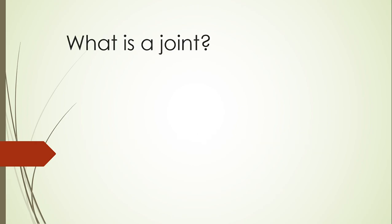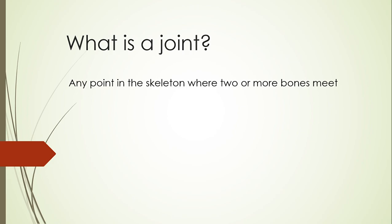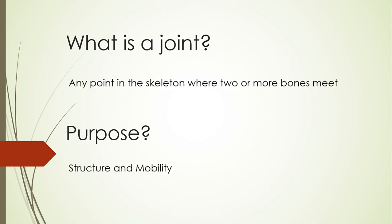So let's get going. When I talk about joints, what is a joint? The way that we would describe a joint is any point in the skeleton where two or more bones meet. If you think about your hand alone, where every single bone is meeting with each other, there are joints occurring between those. They are very important to us because their purpose is to provide us with structure and mobility.